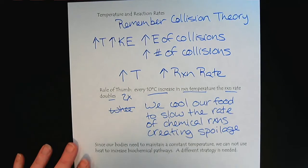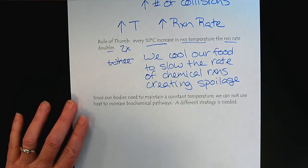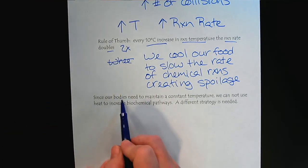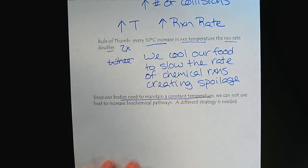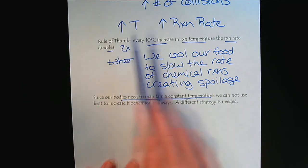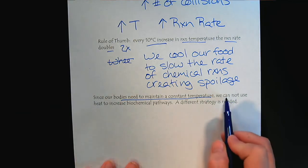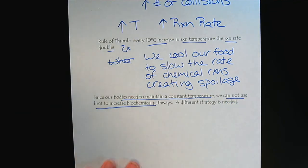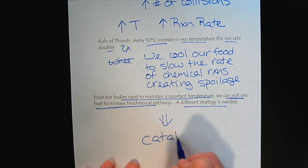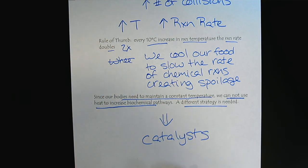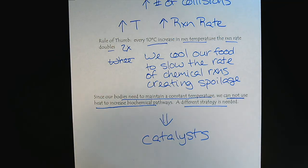Another thing related to temperature: our bodies need to maintain constant temperature. In the laboratory it's common to increase temperature to make a reaction go faster, but inside our body we can't do that — we don't want to boil our cells. Since we cannot use heat to speed up pathways, we need a different strategy, and that strategy is catalysts.